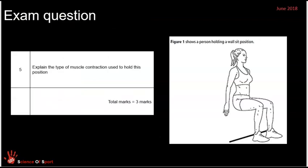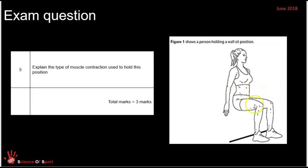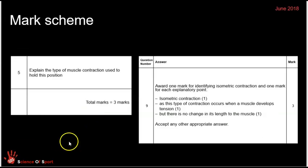To finish, here are a couple of demonstrations of the types of exam question you might come across. The first says: explain the type of muscle contraction used to hold this position, three marks. This person is in a wall sit, and the dominant agonist muscles are the quadriceps. To earn three marks, the mark scheme asks you to identify isometric contraction, that muscle develops tension, but there is no change in length of the muscle.